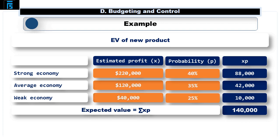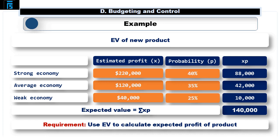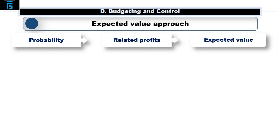The requirement is to use expected values to calculate the expected profit of the new product. Using the expected value approach, we apply the probabilities, which are given to us in the question, to the related profits, so as to calculate the expected value or expected profit of the company's new product.